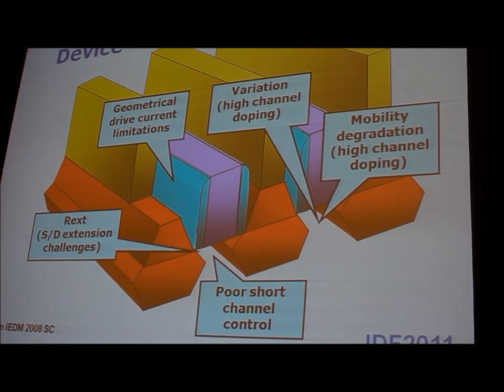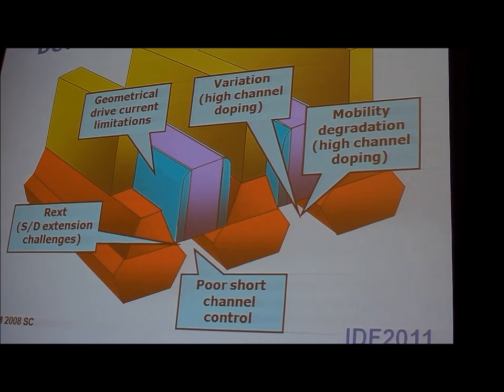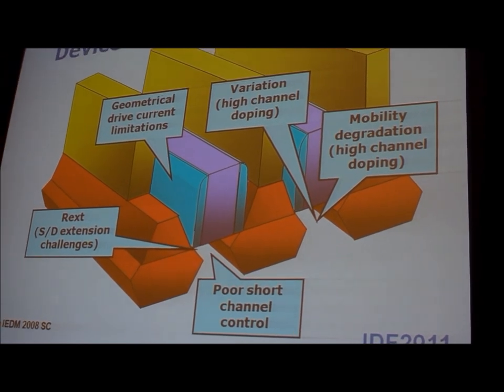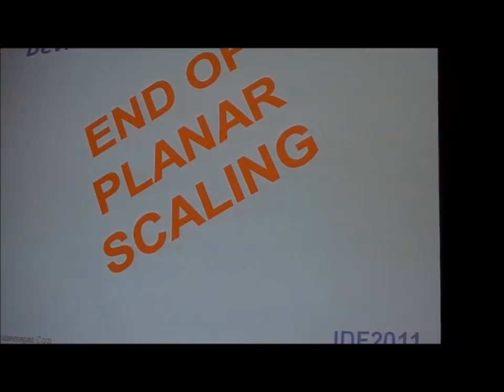Why don't we build planar MOS devices anymore? The fundamental problem is short-channel control. You can't make them any smaller without losing control of your channel and having very high IOFF. So 22 nanometers was basically the end of planar scaling for high-performance devices, and we introduced all the fin devices.